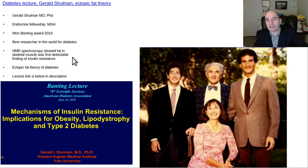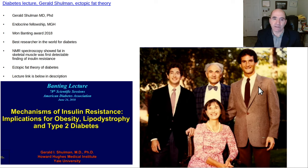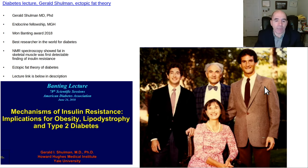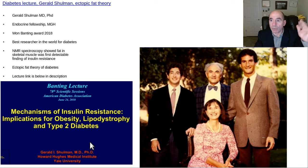Brownlee won the Banting Award in 2004. Gerald Shulman won it in 2018 — that's for the best diabetes researcher in the whole world, and it attracts the top brains. Gerald Shulman's 2018 Banting Award lecture is viewable on the internet in a couple of spots, and I'm going to put the link to it below.